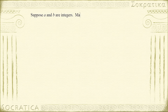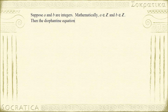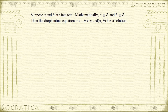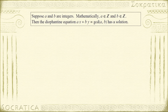Suppose that a and b are integers — mathematically written as a ∈ ℤ and b ∈ ℤ, where ℤ is the mathematical symbol for the set of integers. Then the Diophantine equation ax + by = gcd(a, b) has a solution. In fact it has an infinite number of solutions, but what we're going to do here is learn how to find one solution. In later videos we'll learn how to find all solutions and then generalize this to any linear Diophantine equation in two variables.